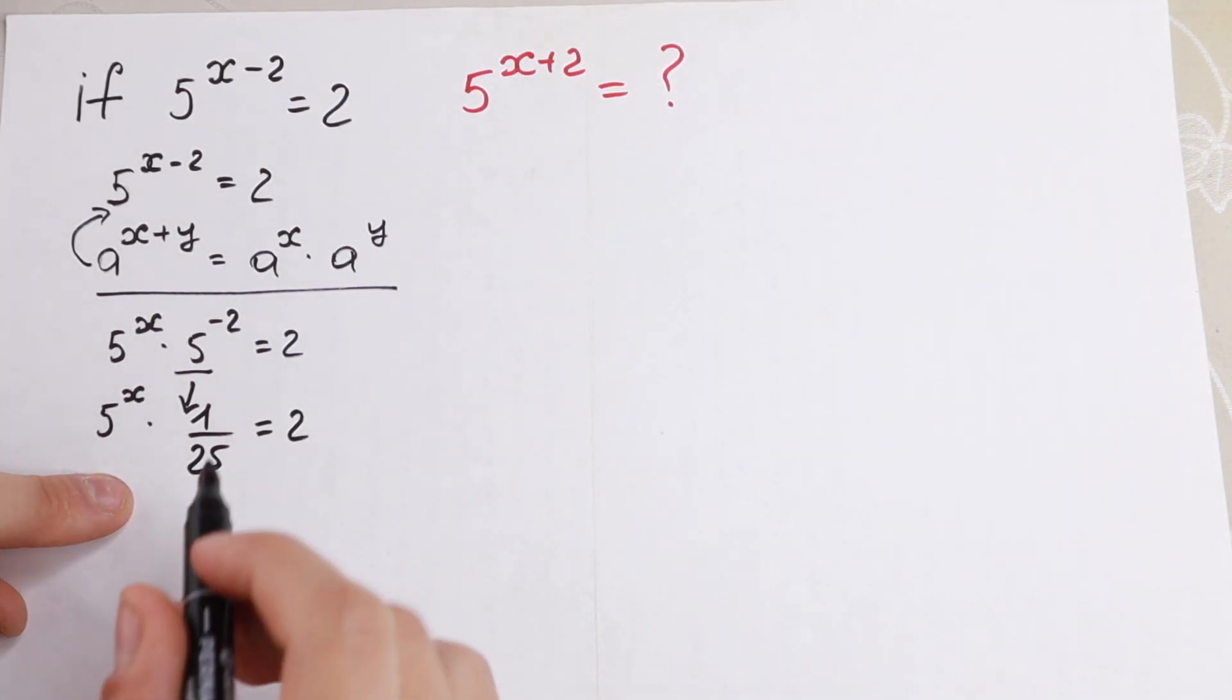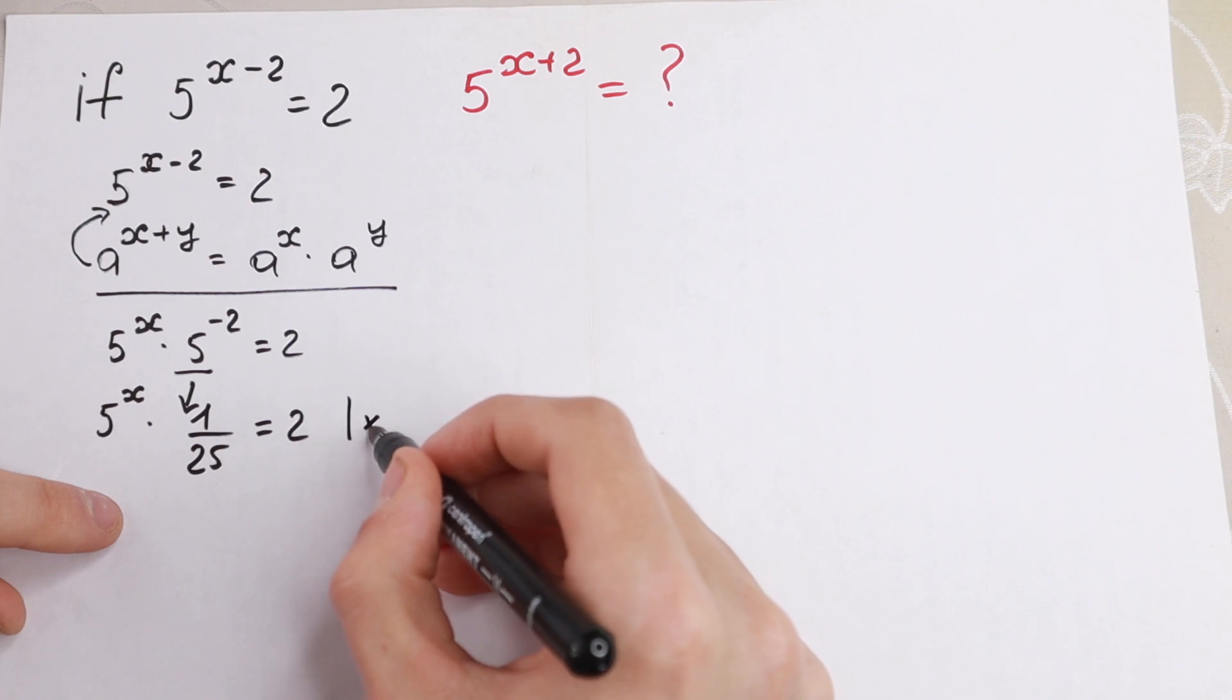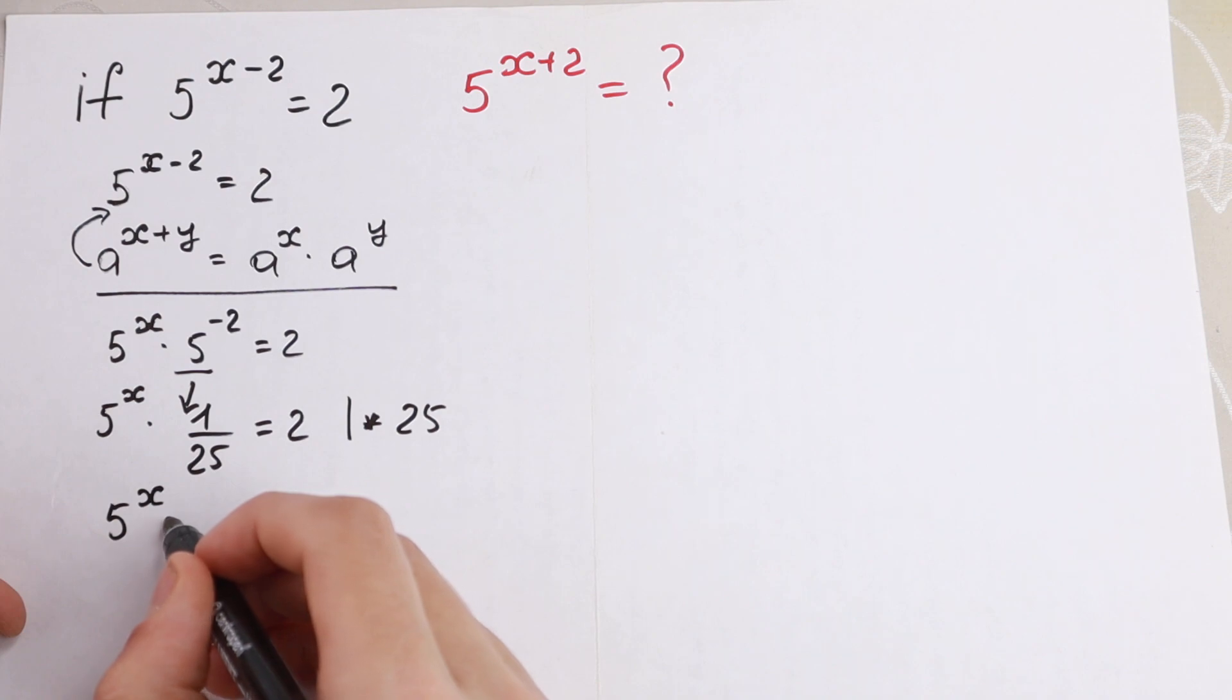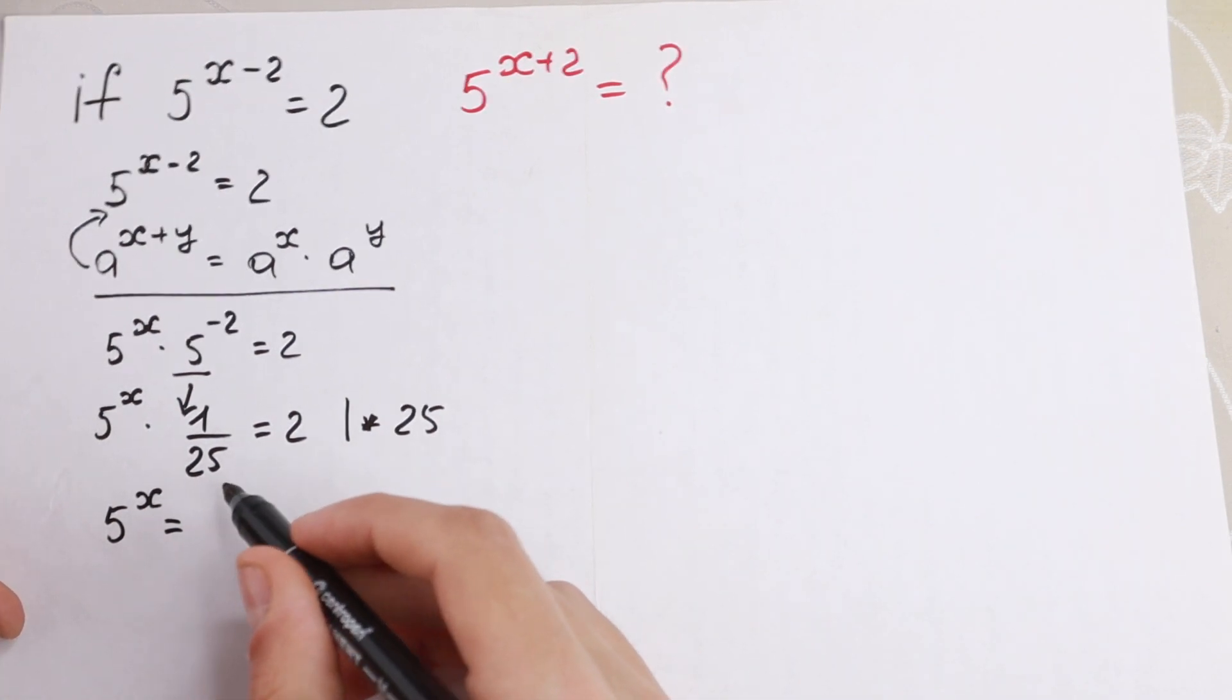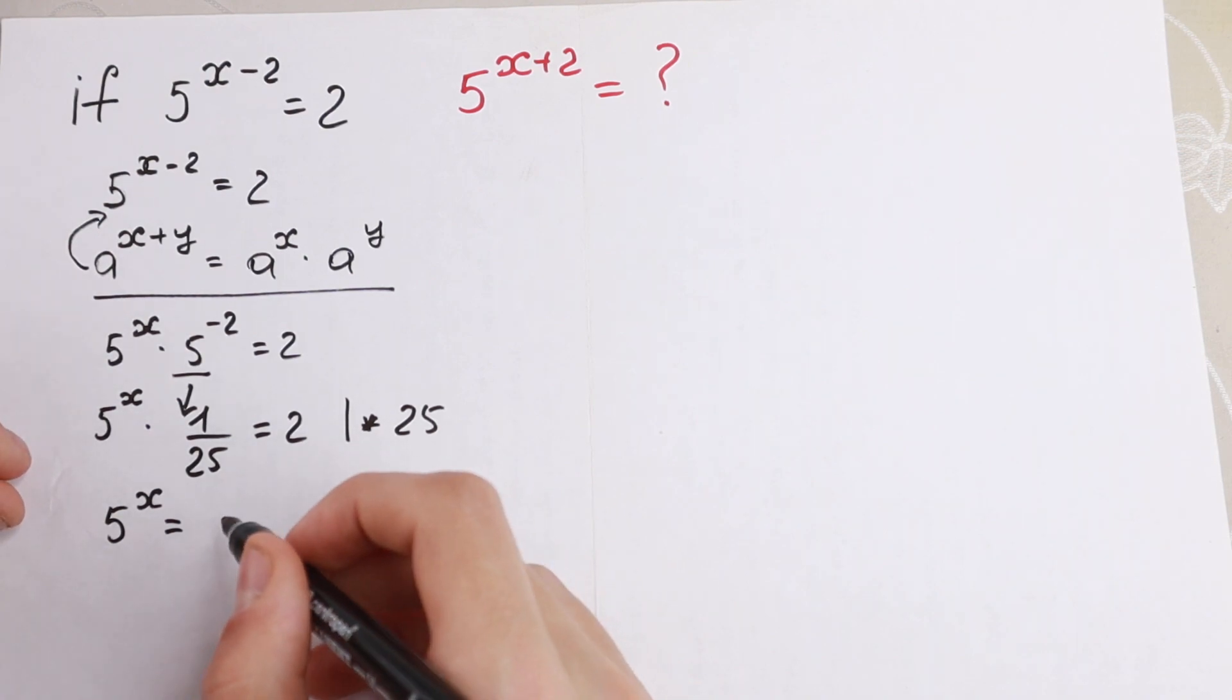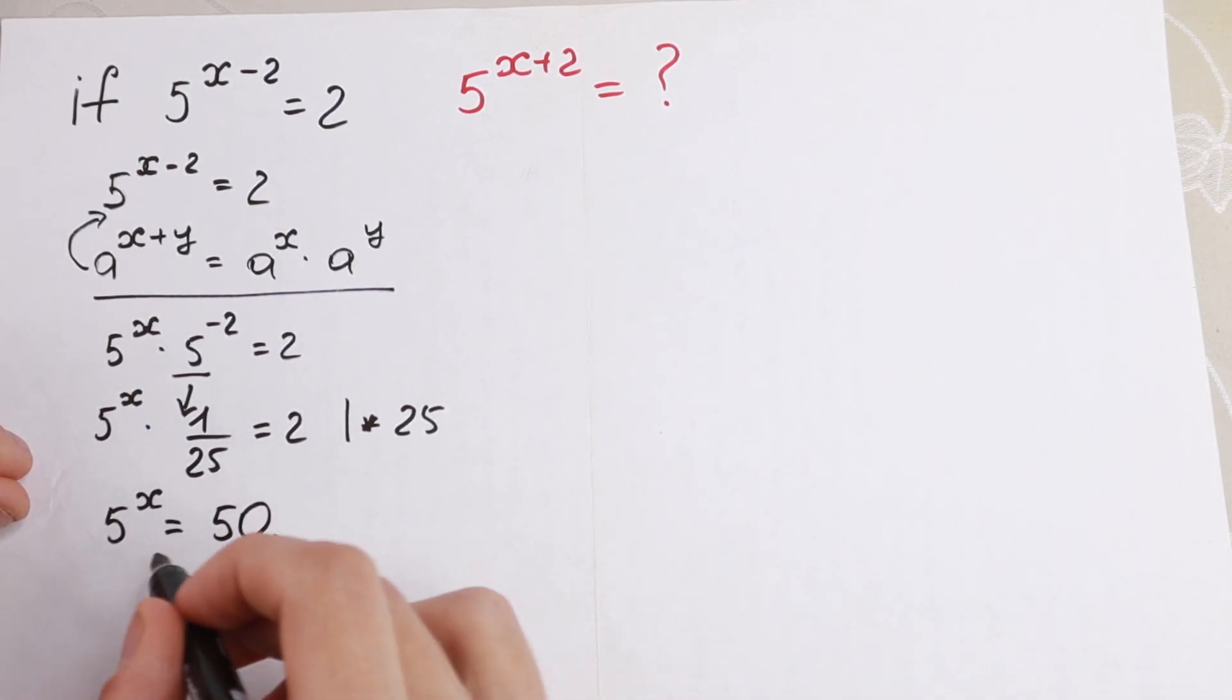And from here, as you can see, if we multiply both sides by 25, we will have that 5 to the power x equals, multiplying by 25, from here we cancel this, and right here we will have 50. So 5 to the power x equals 50.